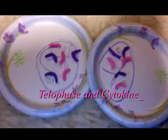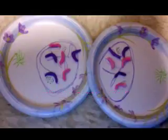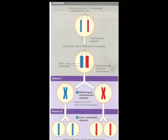During telophase, two daughter nuclei form in the cell and nuclear envelopes arise from the fragments of the parent cell's nuclear envelope and other parts of the endomembrane system. The nucleoli reappear and the chromosomes become less condensed. By late telophase, the division of cytoplasm is in progress, and the two daughter cells appear shortly after mitosis ends.